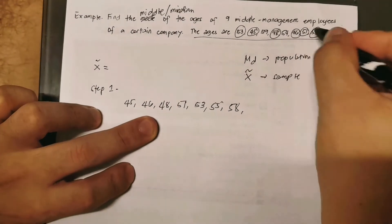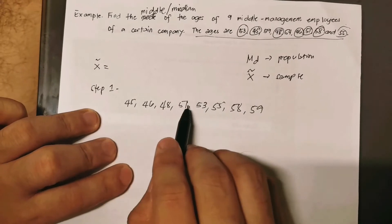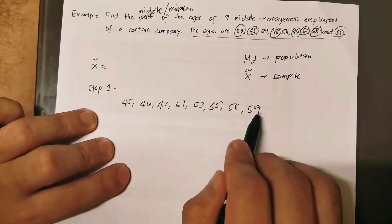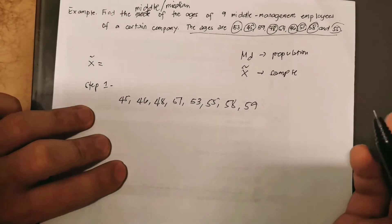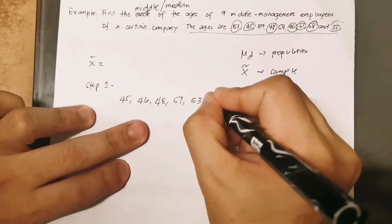You have 53 years old, then 55 years old, then 58 years old, and then 59. One, two, three, four, five, six, seven, eight... I missed one. There's 54, so I'll just insert it here.